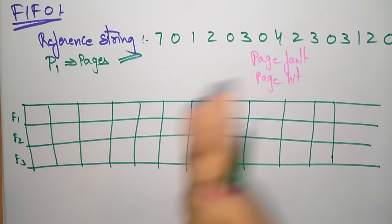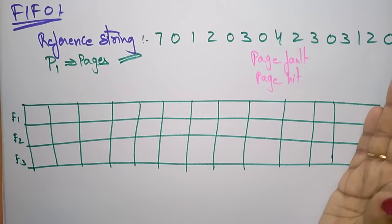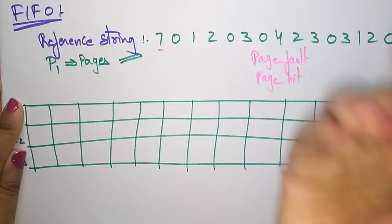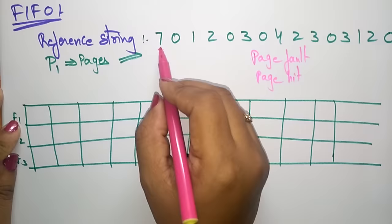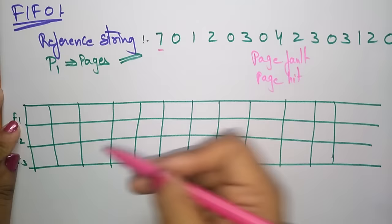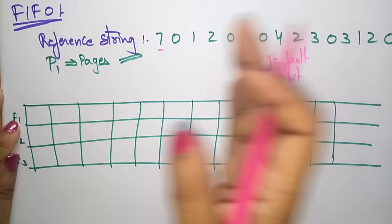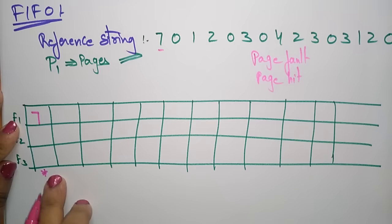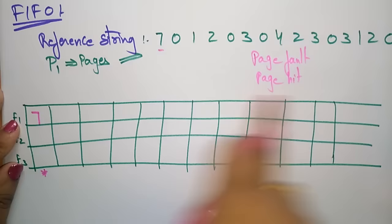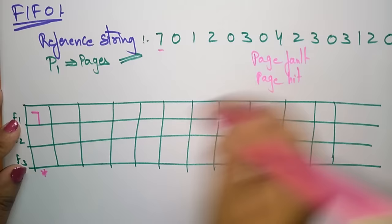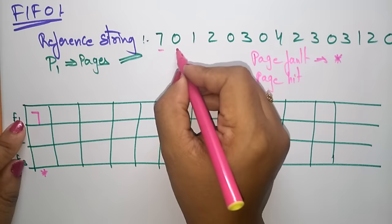Starting out, the main memory is always free. The CPU first demands page 7, which is not present in the main memory. So the control transfers to the operating system, then to the disk, and page 7 is fetched and placed in main memory. This is a page fault because 7 is not in the main memory. Page faults are indicated with a star. Next, the CPU demands page 0, which is also not present — page fault again.